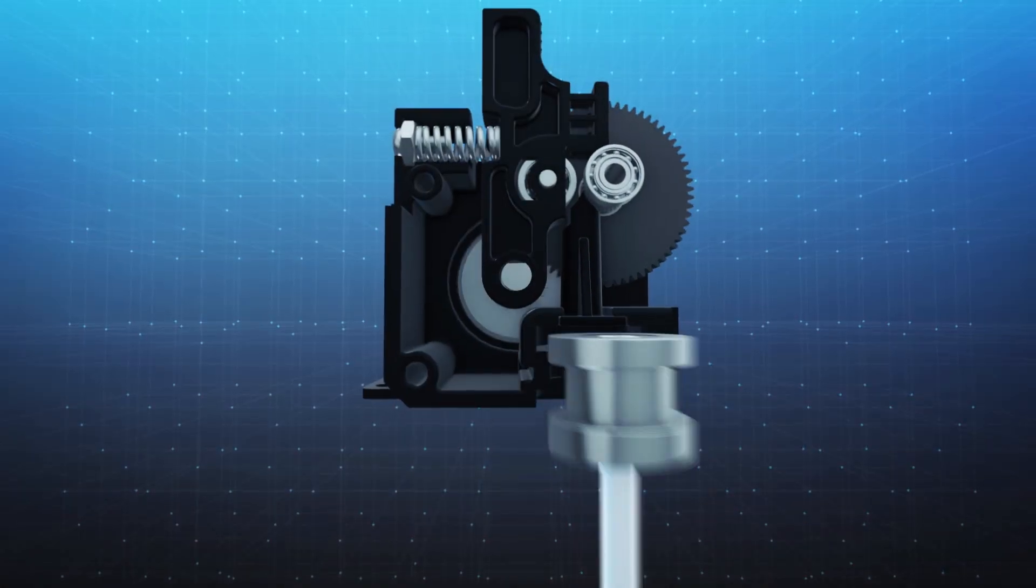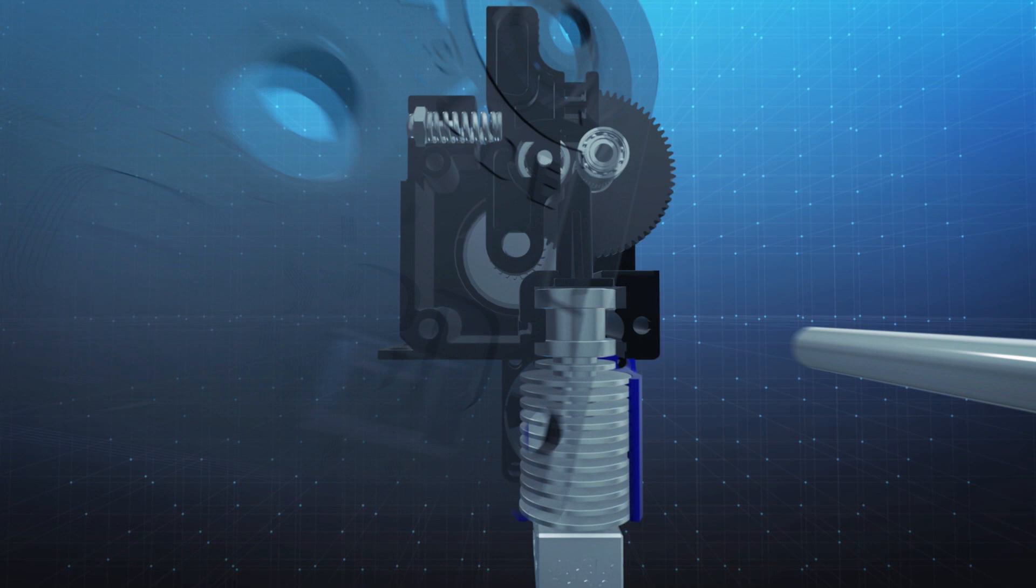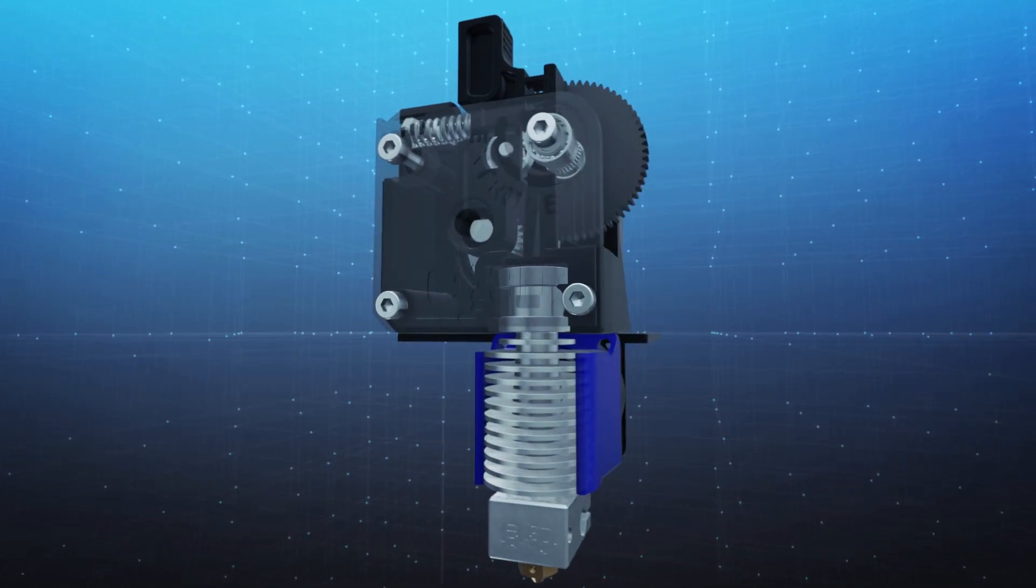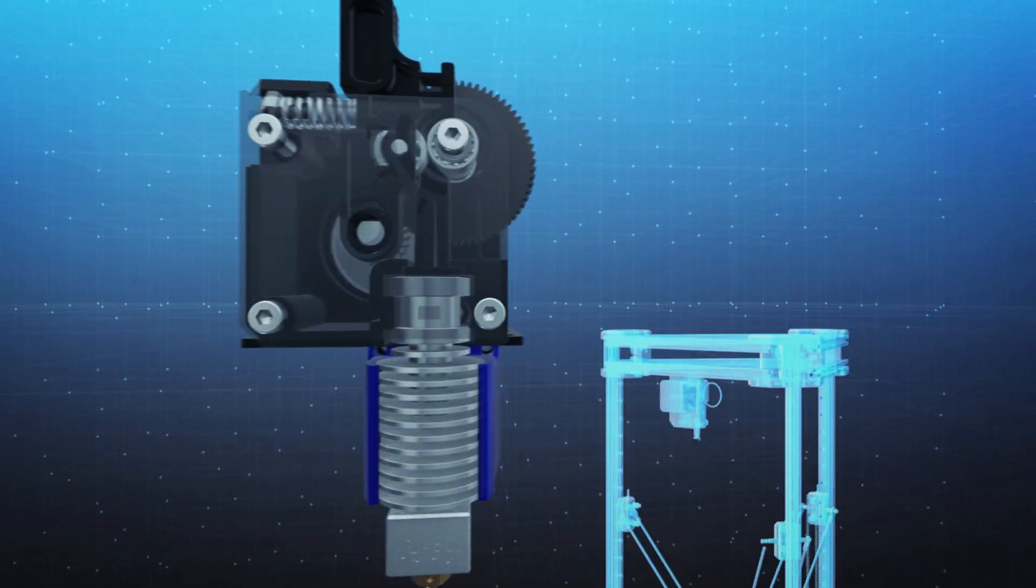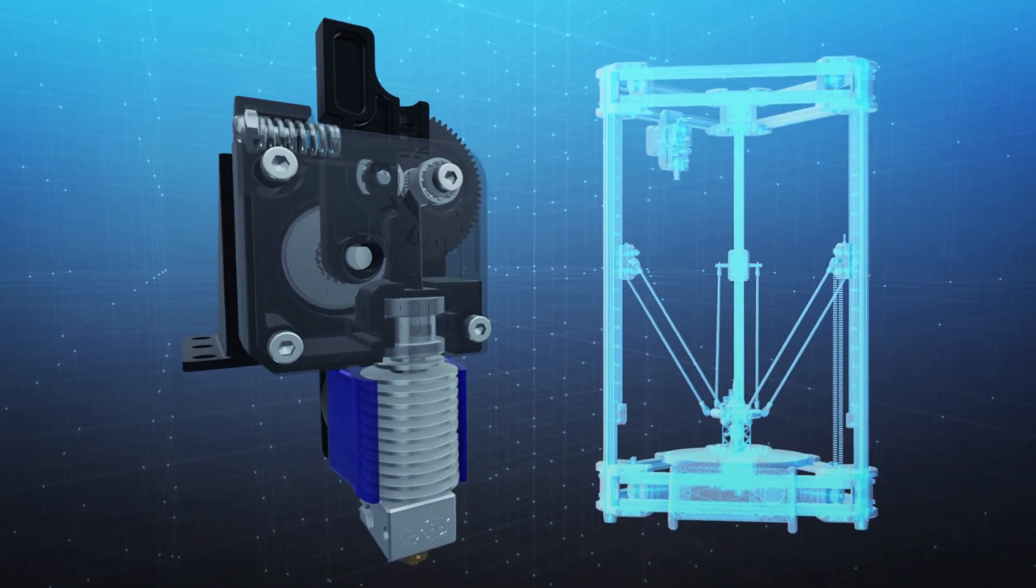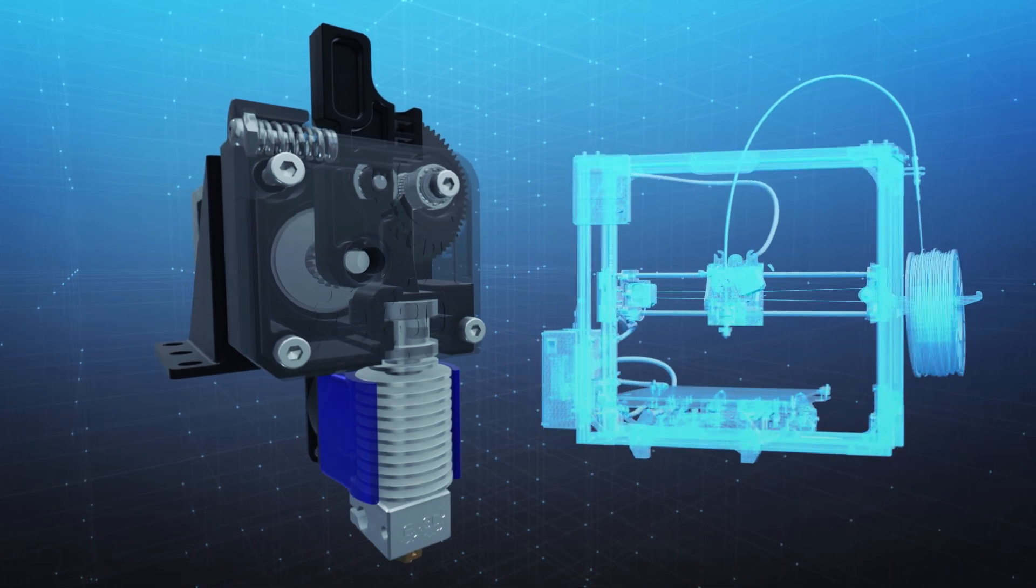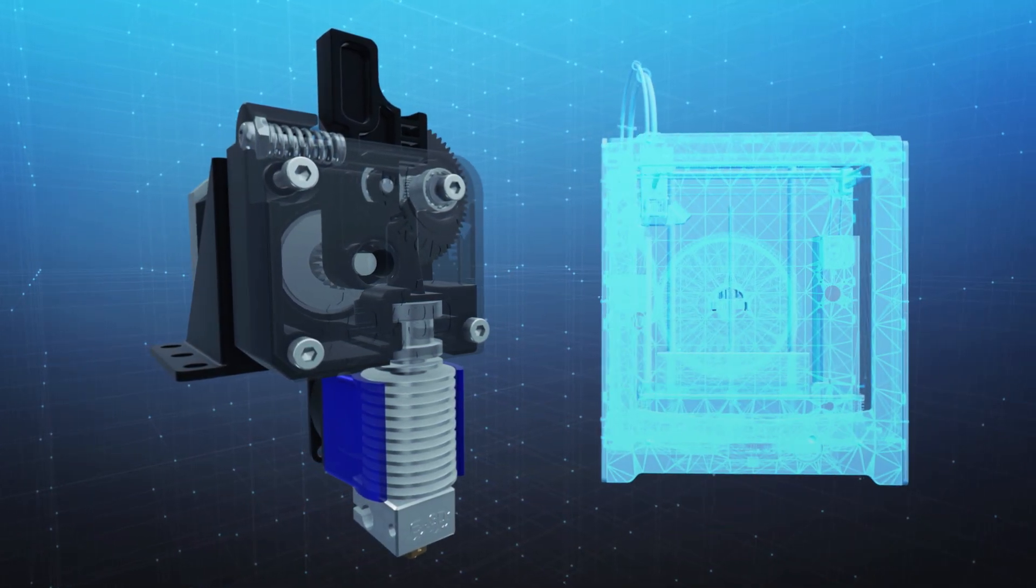Bowden, direct, 1.75 or 3 millimeter filament—Titan is universal and adaptable. Using industry standard NEMA 17 through hole mounting, Titan can be mounted to any printer, just like the rest of E3D's modular ecosystem.